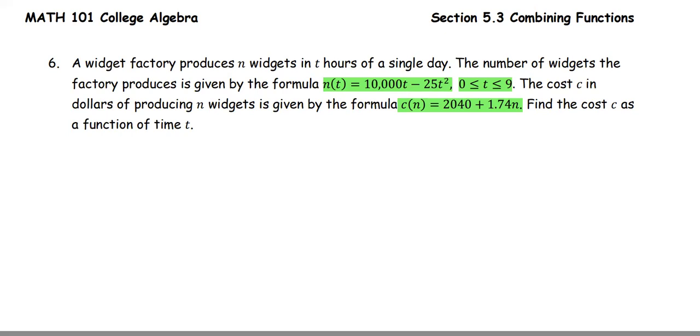As we see the layers, n is a function of t, so t is the input for n. And at the same time, n is the input of c, the cost function. So we're going to start with the composite function in the form of c as a function of n, which is a function of t. So we see the layers of the function.